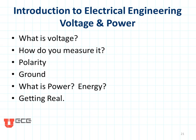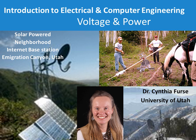Our summary: we talked about what voltage is and how to measure it, its polarity, the impact of using a ground and where you place it, and what power and energy are, followed by some interesting real applications. The solar-powered neighborhood internet base station at the top of Immigration Canyon transmits to a mountaintop near Park City. Getting 200 pounds of car batteries up there — carried by people and horses — is why you want as few solar panels and batteries as possible. So find an interesting application and estimate the solar power you would need for it.